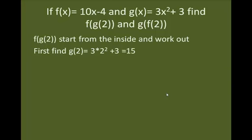Since g of 2 equals 15, then f of g of 2 is equal to finding f of 15, which means we would take the 15 and plug it into our f function. By plugging 15 in for f, we get 10 times 15 minus 4, which is 146. So f of g of 2 is 146.